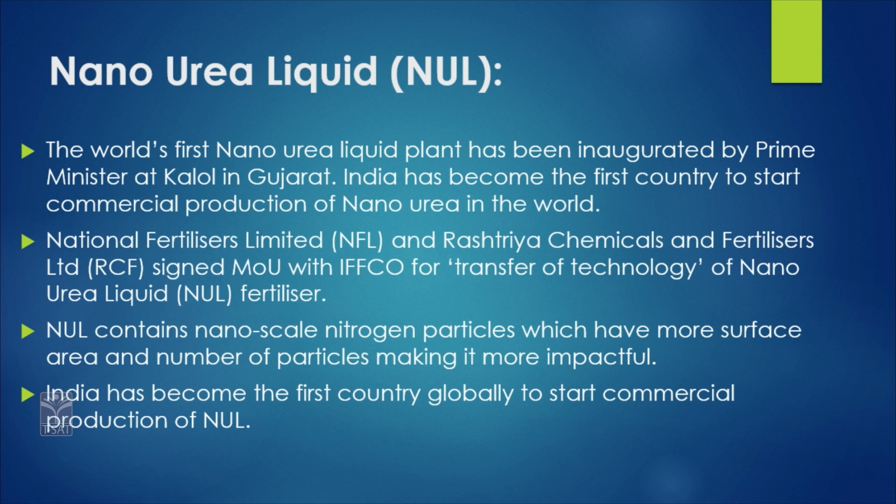Here one more question may come: 'Which country started the commercial production of nano urea?' — India is the answer. National Fertilizers Limited (NFL) and Rashtriya Chemicals and Fertilizers Limited (RCF) signed a memorandum of understanding with IFFCO for transfer of technology for nano urea liquid (NUL) fertilizer. IFFCO is preparing this nano urea with the support of these two organizations — NFL and RCF. NUL contains nano scale nitrogen particles which have more surface area and number of particles, making it more impactful.